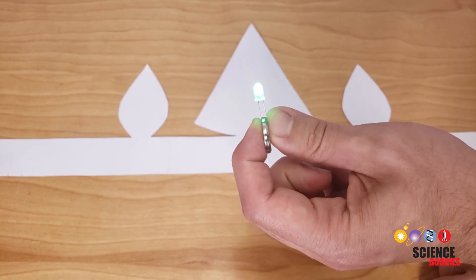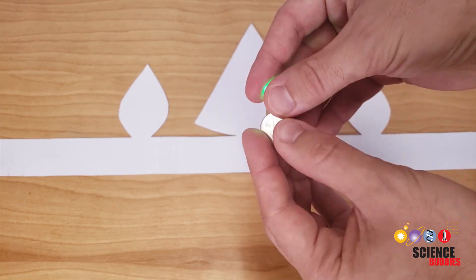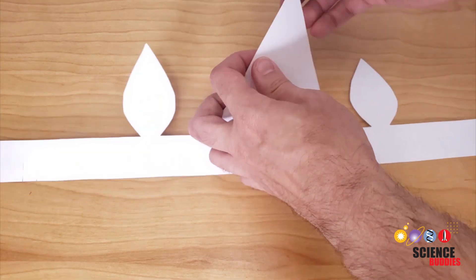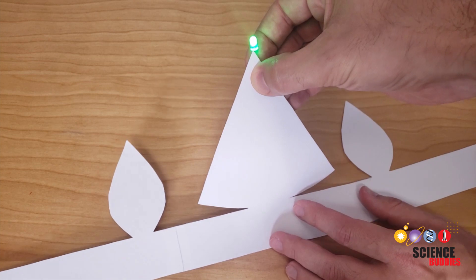Now if you don't want to bother with the copper tape at all, the simplest way to do this is to just take some tape, tape the legs of the LED directly to the battery, and then you can tape the battery to the back of the horn like this and you'll have a light up LED on your horn.